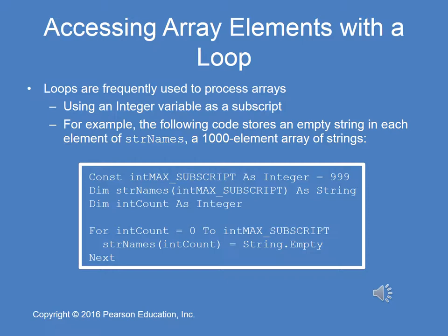I briefly mentioned earlier in this lecture that loops are used frequently to process arrays, and the for loop is very useful. In this particular coded example, we use a for loop with an integer counter set to zero to int max subscript, and int max subscript is the largest subscript for the declared string names array. In this example, we're setting each of the string names, zero to int max subscript — which in this case is 999 — to empty. So this small amount of code, six lines, actually sets the value for a thousand elements within the string names array.